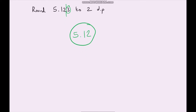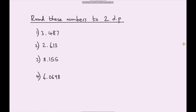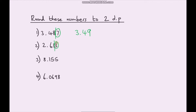Pause the video and have a go at these for yourself. For two decimal places: first decimal place, second decimal place — draw our line in and look at this digit. This number is greater than 5, so we round up and it becomes 3.49. Next one: first, second decimal place — draw our line in. This time the digit is less than 5, so we round down to 2.61.